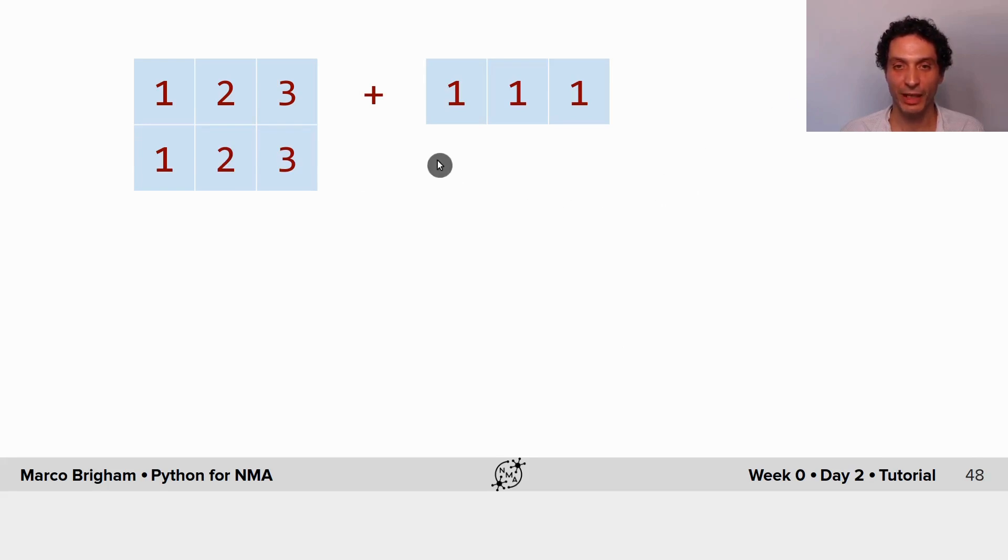What if I add a NumPy array with three elements, a 1D NumPy array to a 2D NumPy array with two elements here?